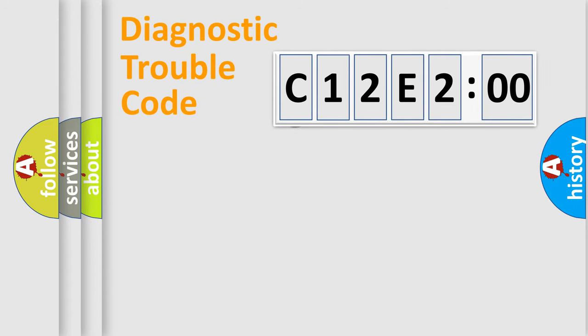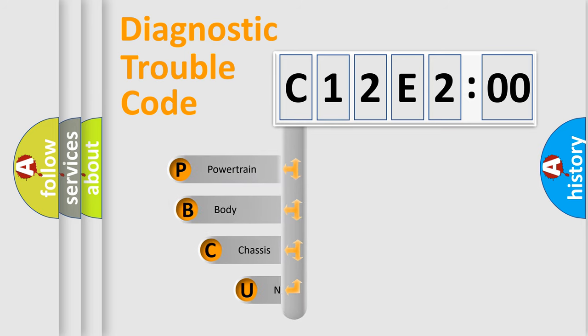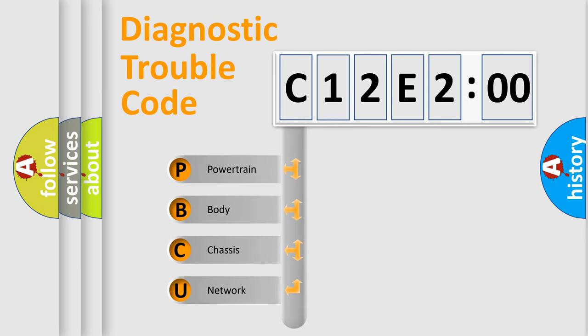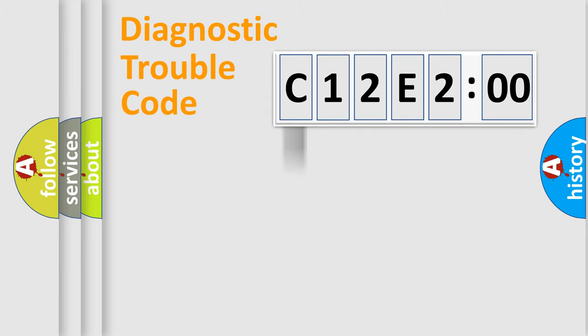First, let's look at the history of diagnostic fault code composition according to the OBD2 protocol, which is unified for all automakers since 2000. We divide the electric system of an automobile into four basic units: Powertrain, Body, Chassis, and Network.